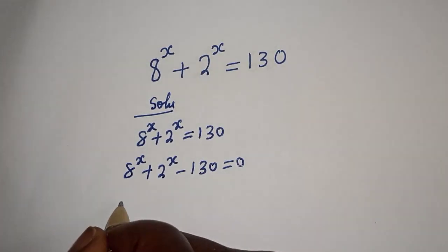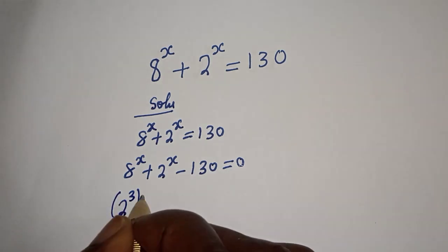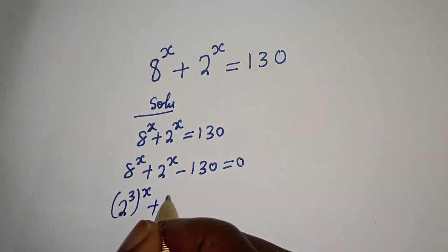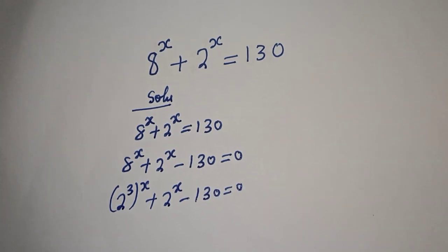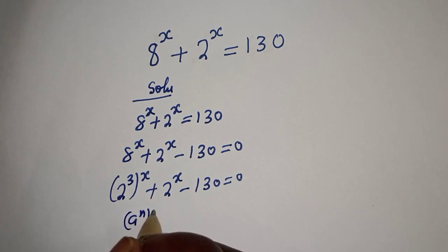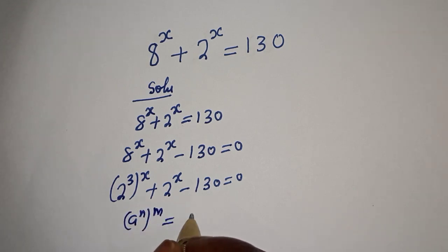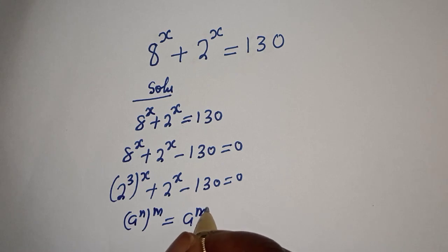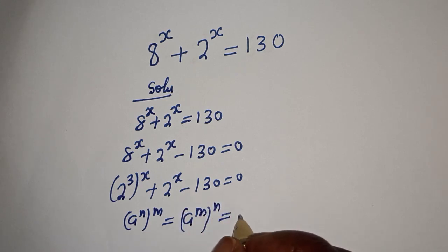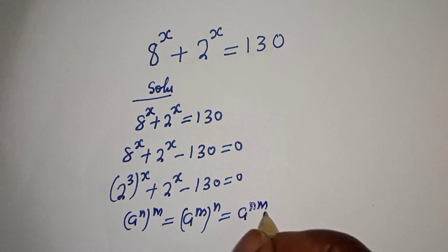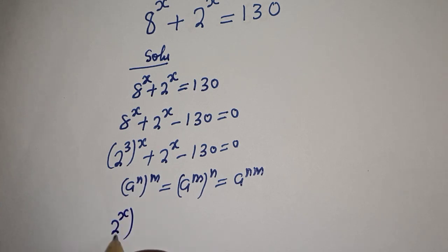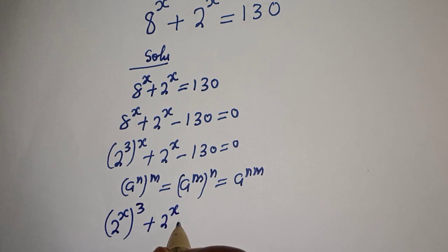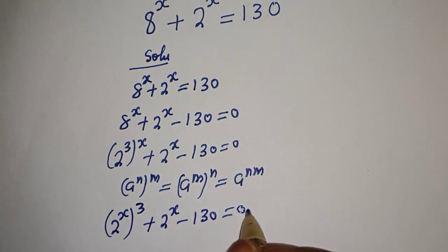h raised to power s can be written as 2 raised to power t, to the power of s. If you have a raised to power n to the power of m, this is equal to a raised to power m to the power of n, which equals a raised to power nm. Then 2 raised to power t to the power of s, plus 2 raised to power s minus 130 is equal to 0.